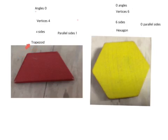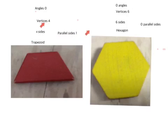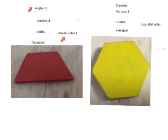The trapezoid has zero right angles, four vertices, and four sides. And it has one pair of parallel sides.